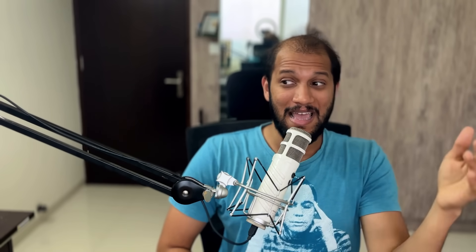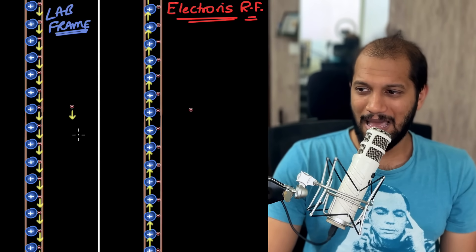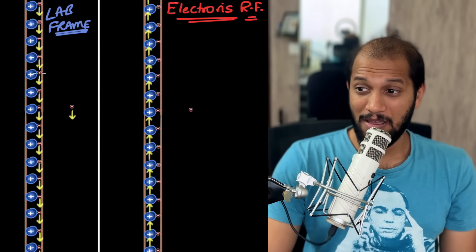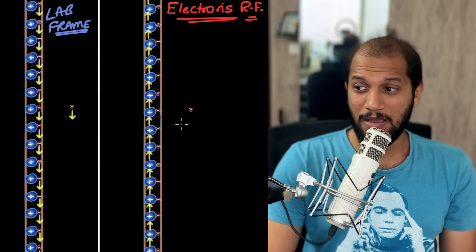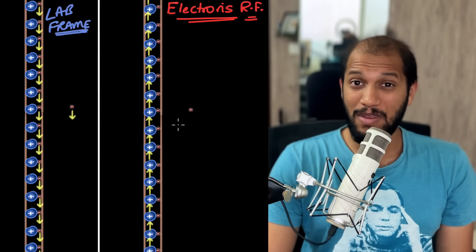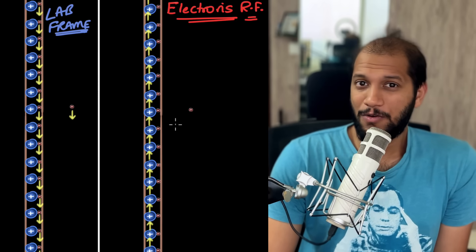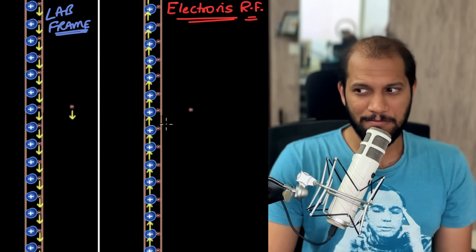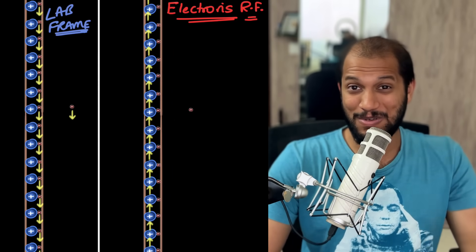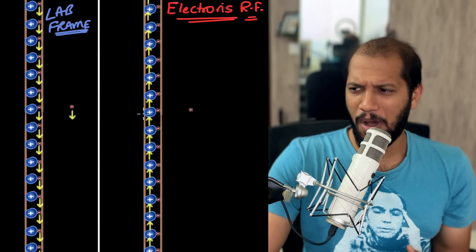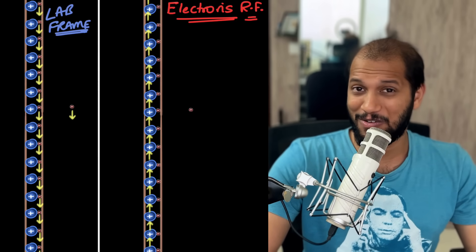We won't worry about why length contraction happens; we'll just take Einstein's word for it. But now let's use this in our situation. When we jump from the lab reference frame to the electron's reference frame, the protons which were at rest start moving, and the electrons which were moving come to rest. Can we use Einstein's length contraction and see how the situation really looks? I want you to pause the video and figure out whether the wire looks charged after applying length contraction.